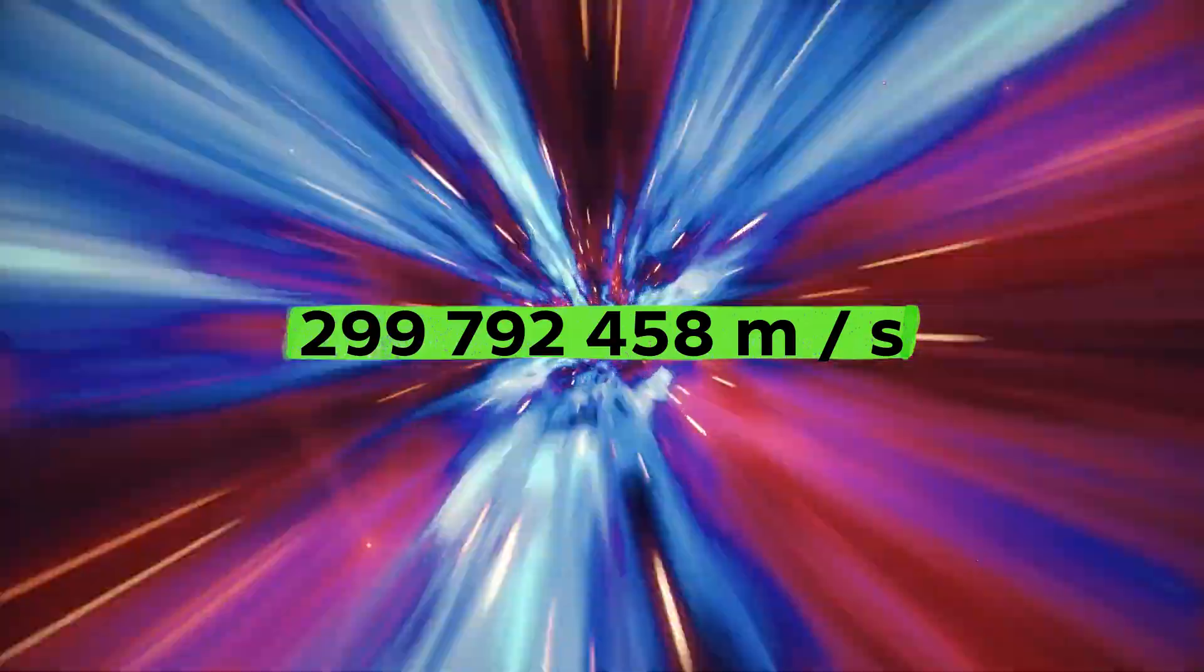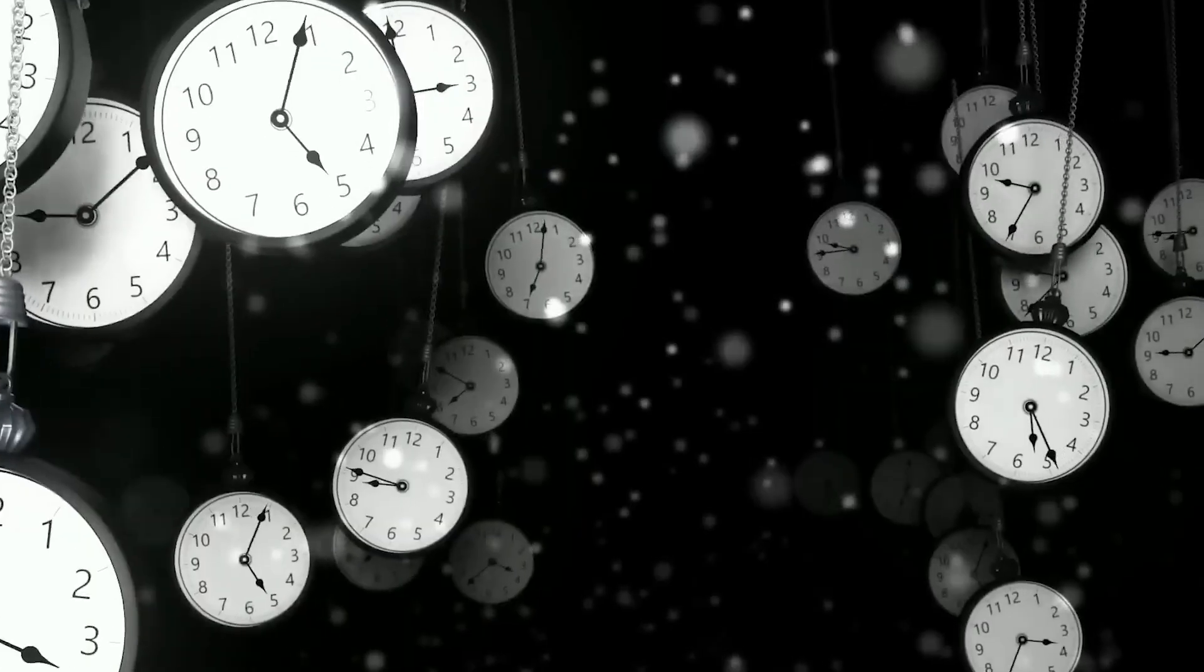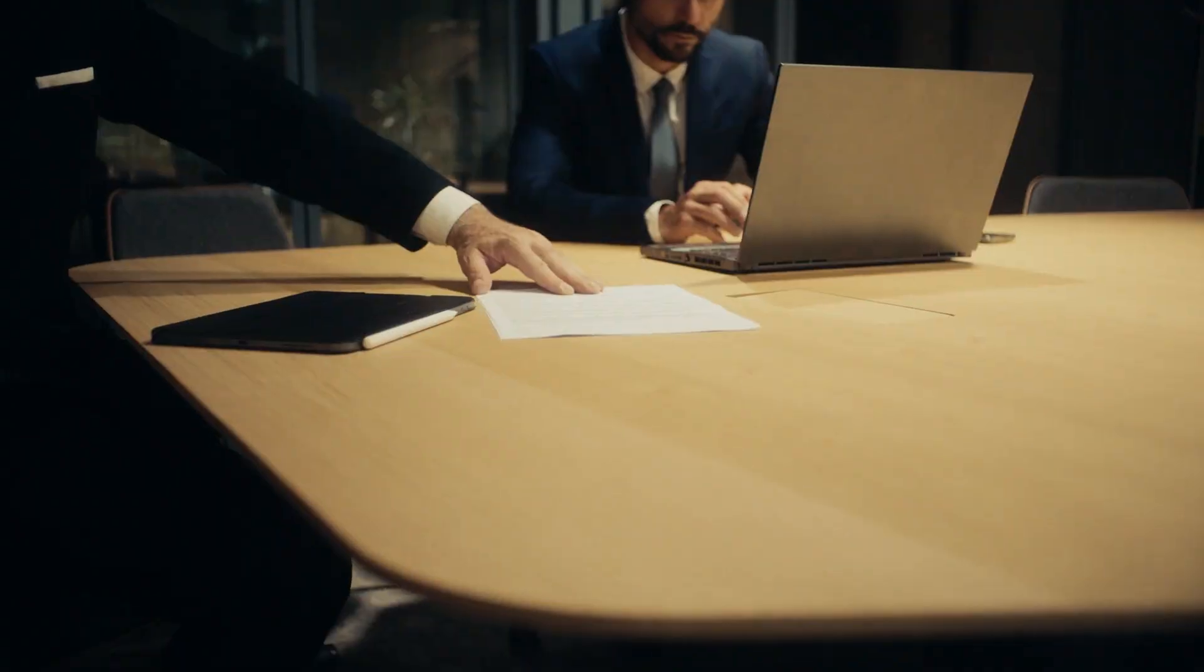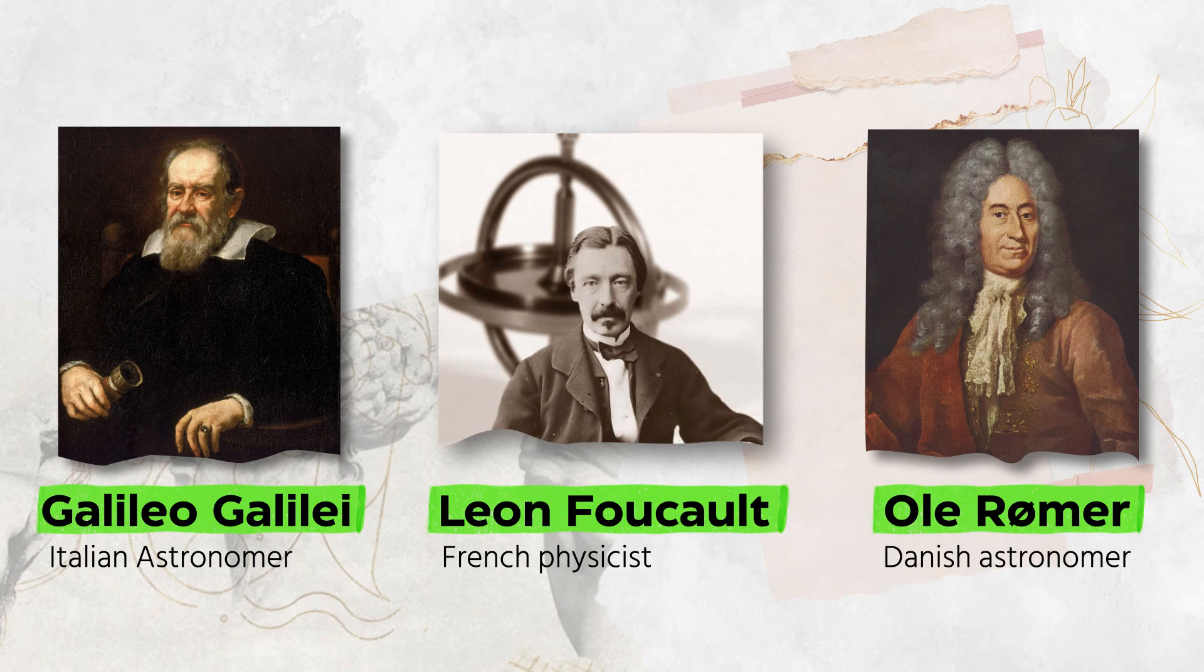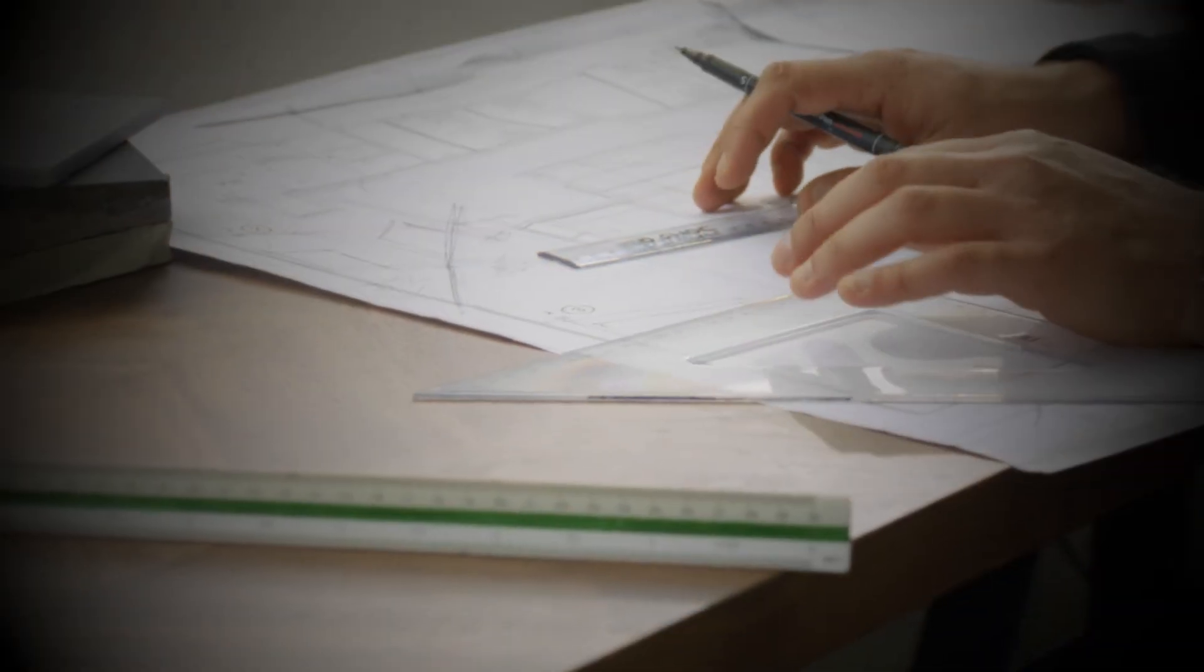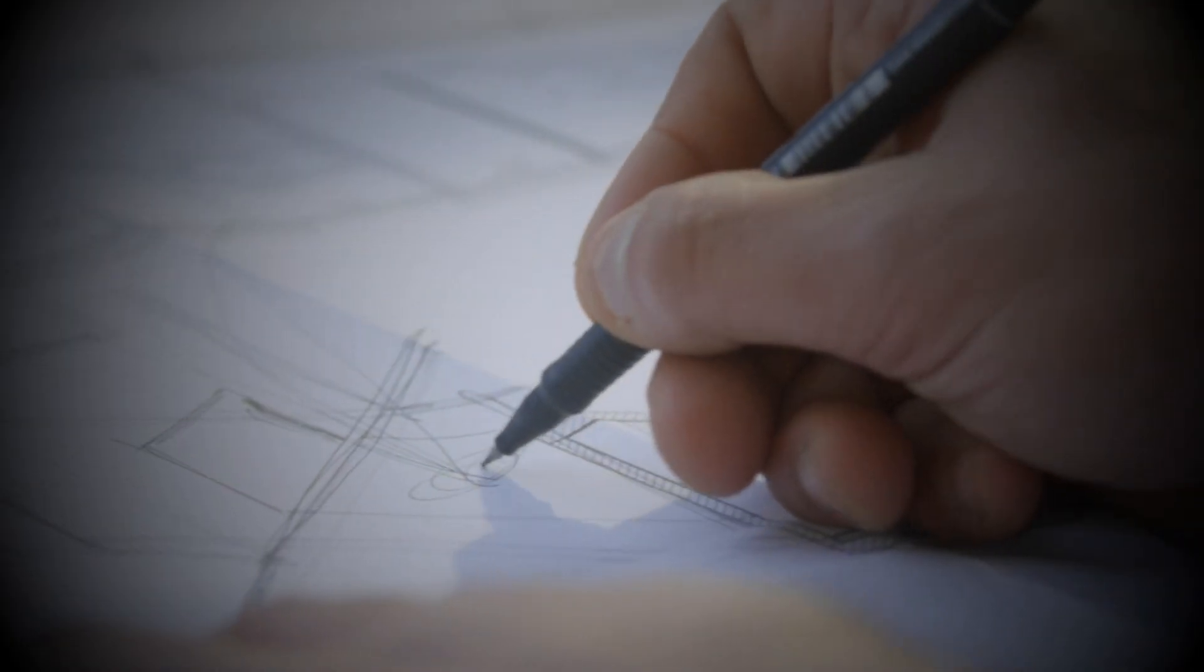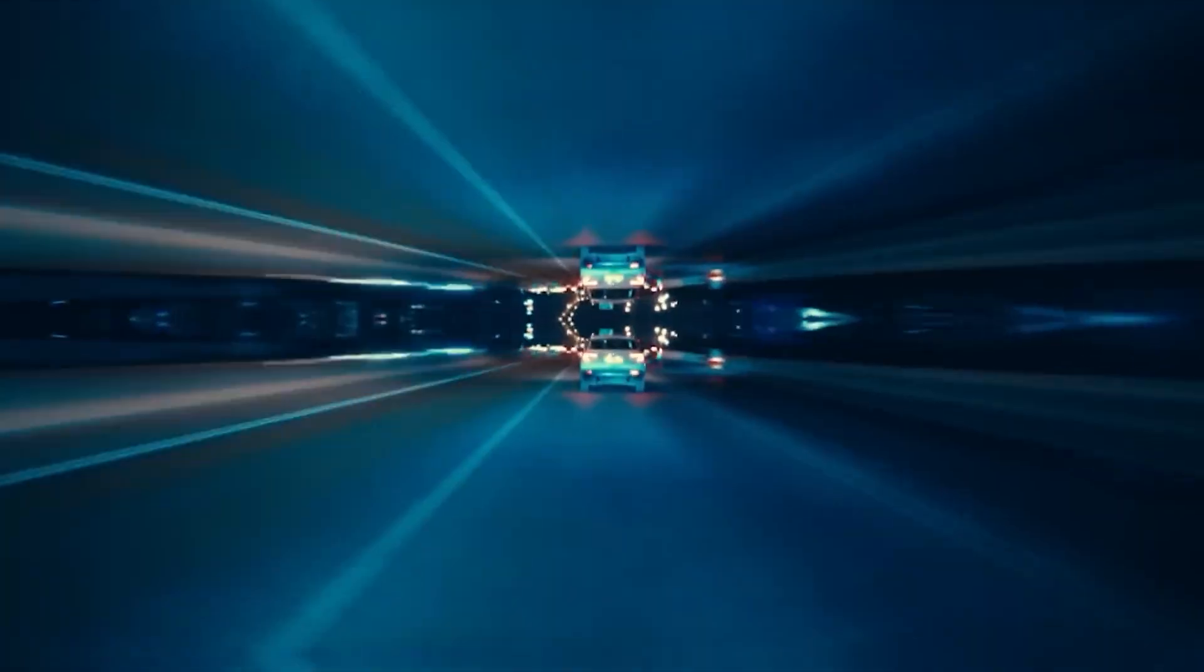299,792,458 meters per second is just an average speed value. You might think I'm insane and just putting an allegation on all the efforts of Galileo Galilei, Leon Foucault, and Ole Rømer. No doubt all these great men had put their extensive efforts in figuring out the speed of light, yet there's something they've missed.